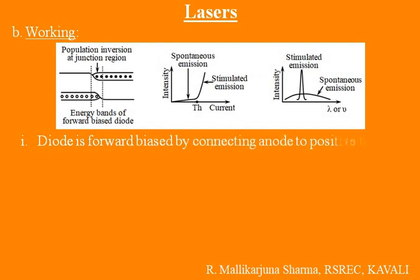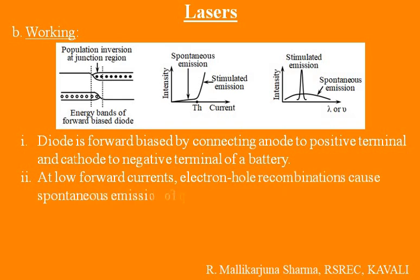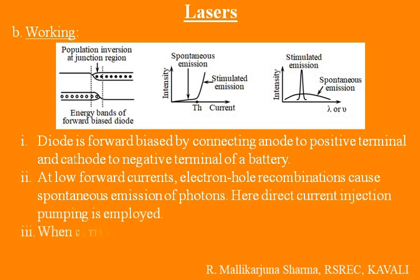Draw the three diagrams. First point: The diode is forward biased by connecting the anode to the positive terminal and the cathode to the negative terminal of a battery. Second point: At low forward currents, electron-hole recombinations cause spontaneous emission of photons. Here, direct current injection pumping is employed.